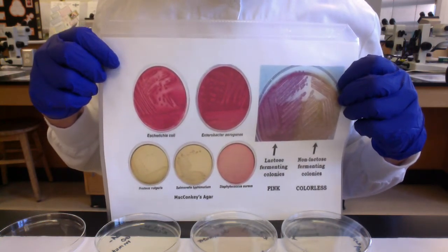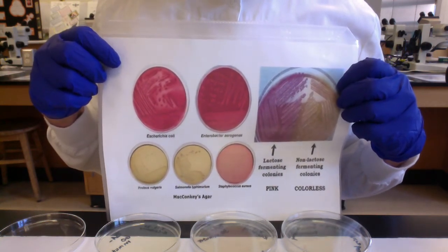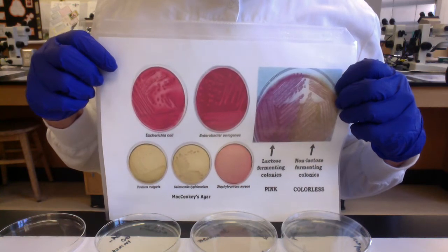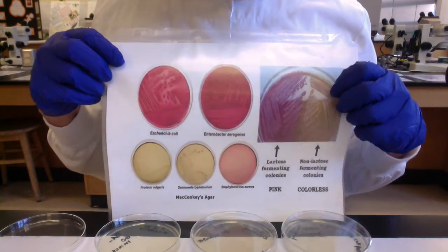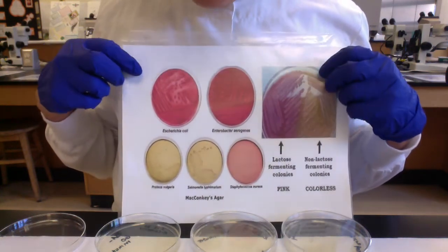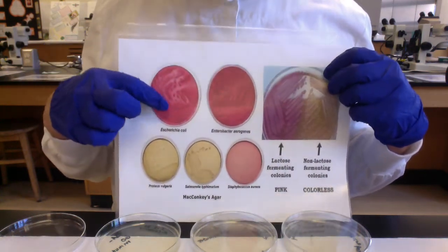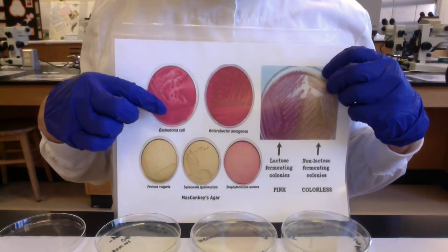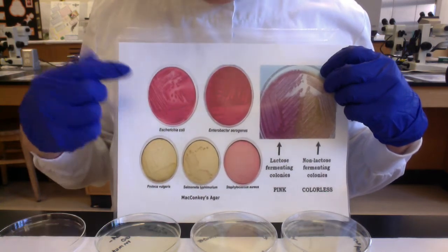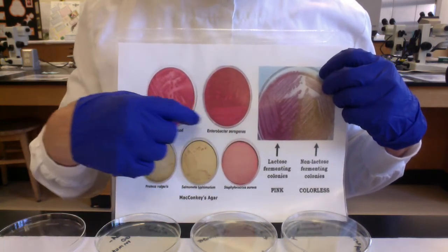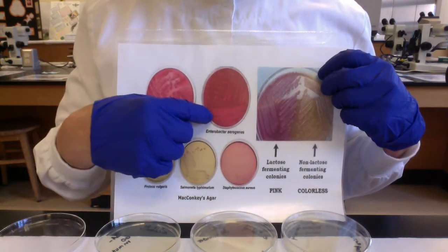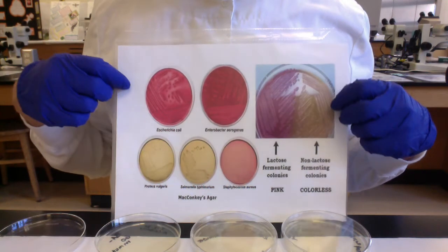Two examples of LAC-positive, lactose-fermenting Enterobacteriaceae would be our good friend E. coli and its close cousin Enterobacter aerogenes. These two can both ferment lactose.